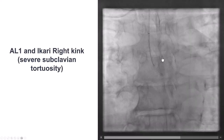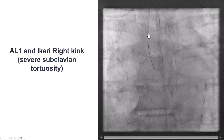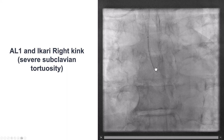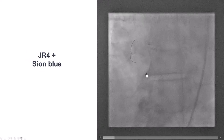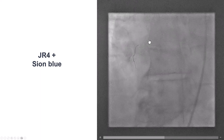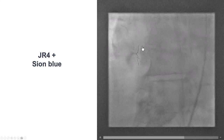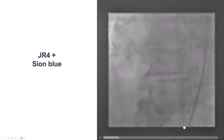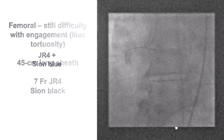The next step was to restore antegrade flow, but we had a lot of difficulty advancing guide catheters and engaging the right coronary artery. We tried AL1 that kinked and an Ikari that kinked, and we were unable to engage despite using a guide extension. So eventually we switched to femoral access and tried a 6 French JR4 guide, but we also had fairly poor support due to iliac tortuosity.